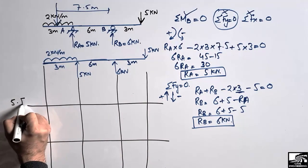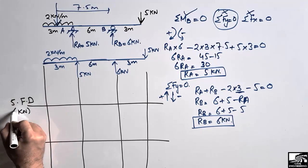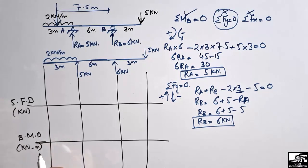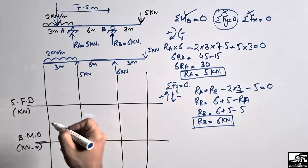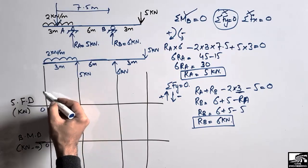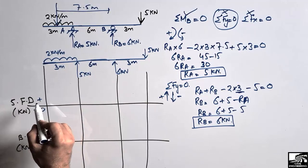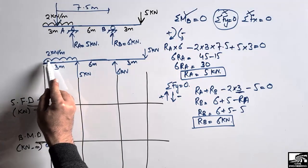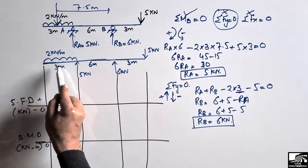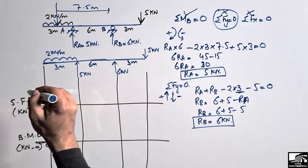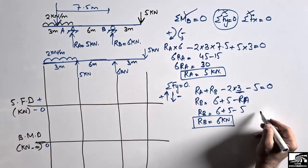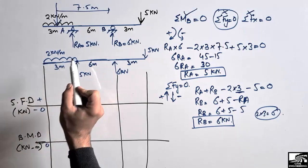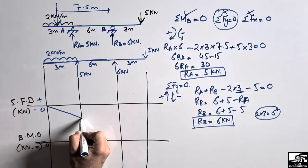This reference line is for the shear force diagram in kilonewtons, and this will be the bending moment diagram in kilonewton-meters. Values above the reference line are taken as positive and below as negative. Starting from the left end: there is a downward UDL of 2 kN/m over 3 meters, so 2 × 3 = 6 kN acting downward up to this point. Since it is acting downward, it gives minus 6.